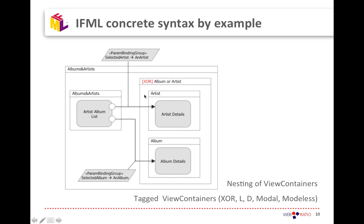Containers always contain components, and containers are connected through flows — either data flows or navigation flows. Navigation flows start from events. Containers can also have tags that describe their behavior: for instance, XOR describes mutual exclusion between sub-parts, but you could also have tags like marking a window as modal or modeless and so on.